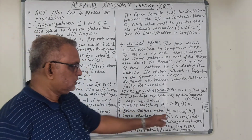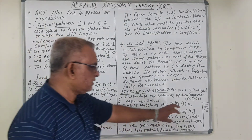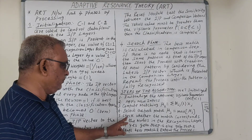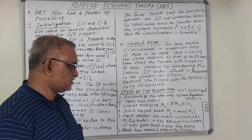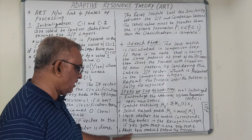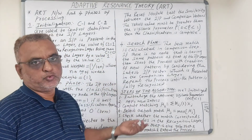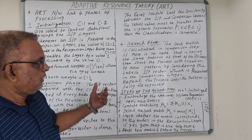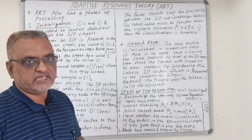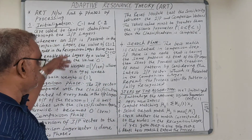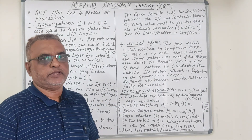Select the best match mu_j as the maximum of all mu_j values. Check whether the match corresponds to nodes in the recognition layer; if yes, go to Step 6 to adopt the best match and repeat the process. Otherwise, apply new inputs again from Step 2. In this video we discussed Adaptive Resonance Theory, its classifications, the different processing phases, and the steps of the algorithm.